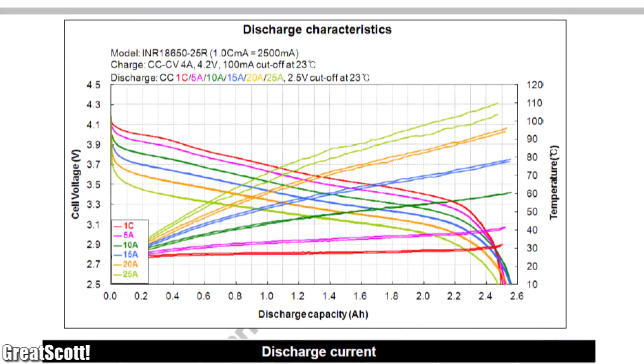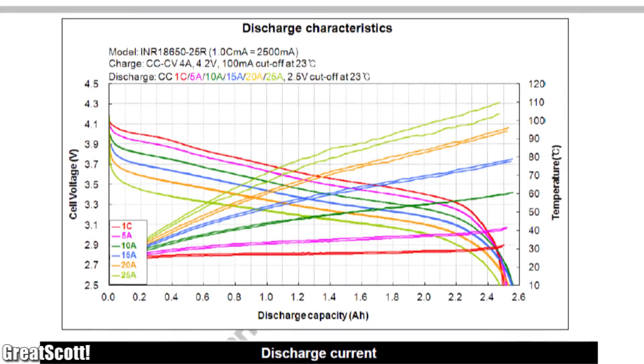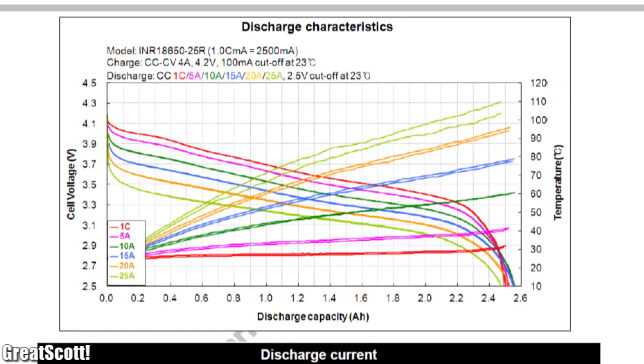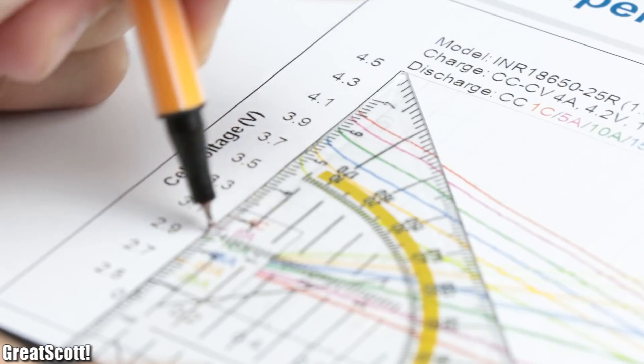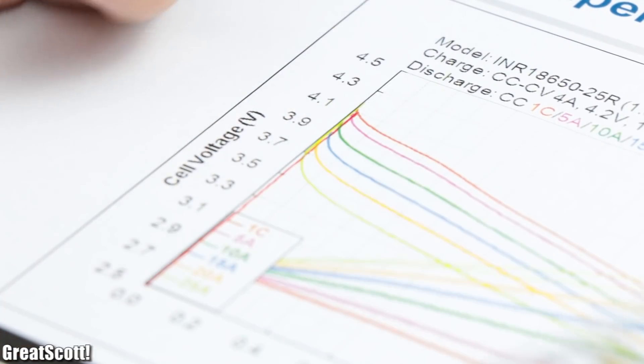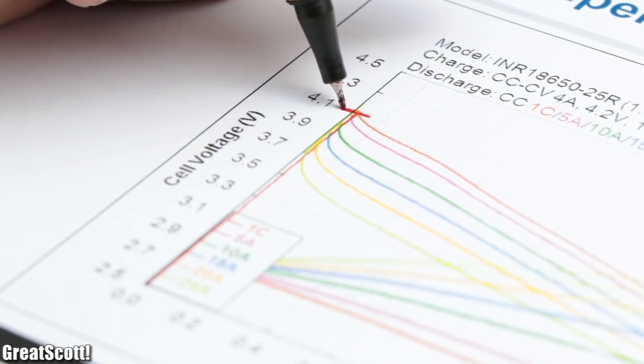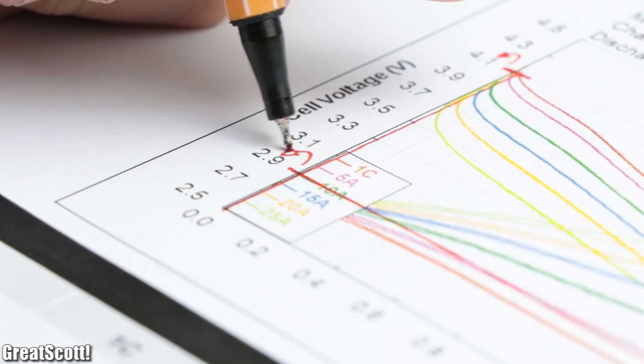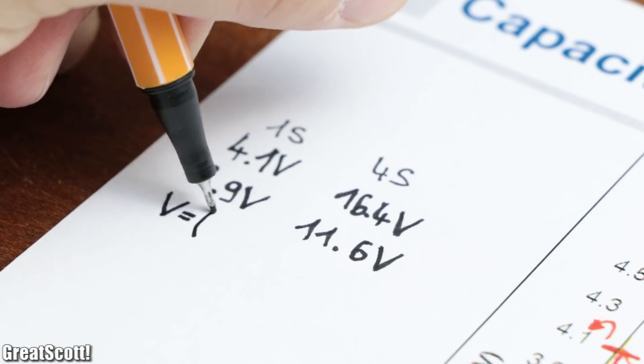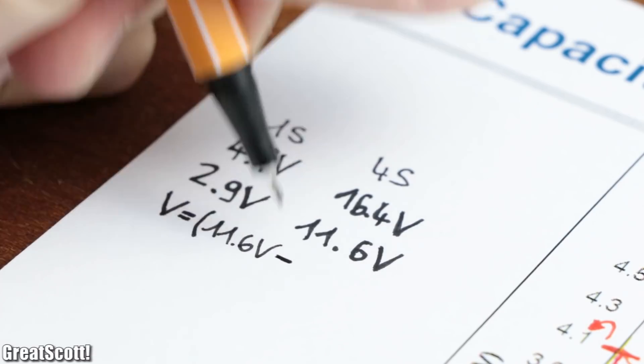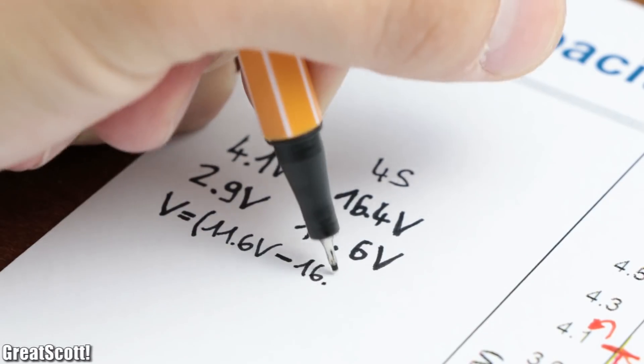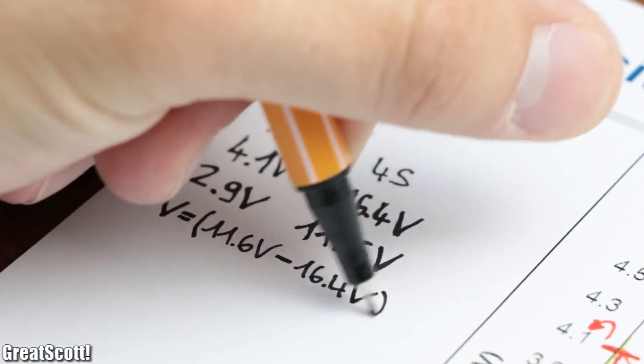For example, if we have a look at the discharge curve of the utilized INR 18650-25R lithium-ion batteries, then we can see that their voltage range starts at 4.1 volts and goes down to around 2.9 volts. Multiply that by 4 since I got a 4S 4P battery pack, and we got a voltage window of 16.4 to 11.6 volts.